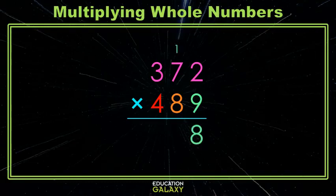7 times 9 is 63, plus the 1 we carried is 64. Leave the 4, carry the 6. 3 times 9 is 27, plus the 6 we carried is 33. And if you'd like, you can put a comma there.